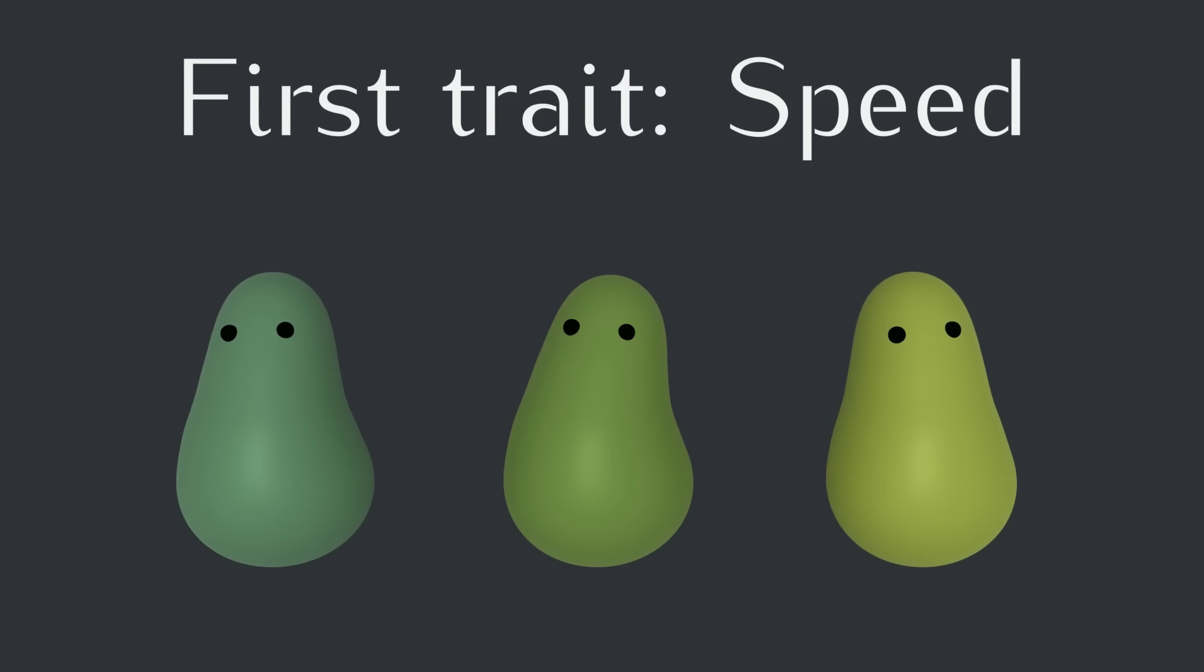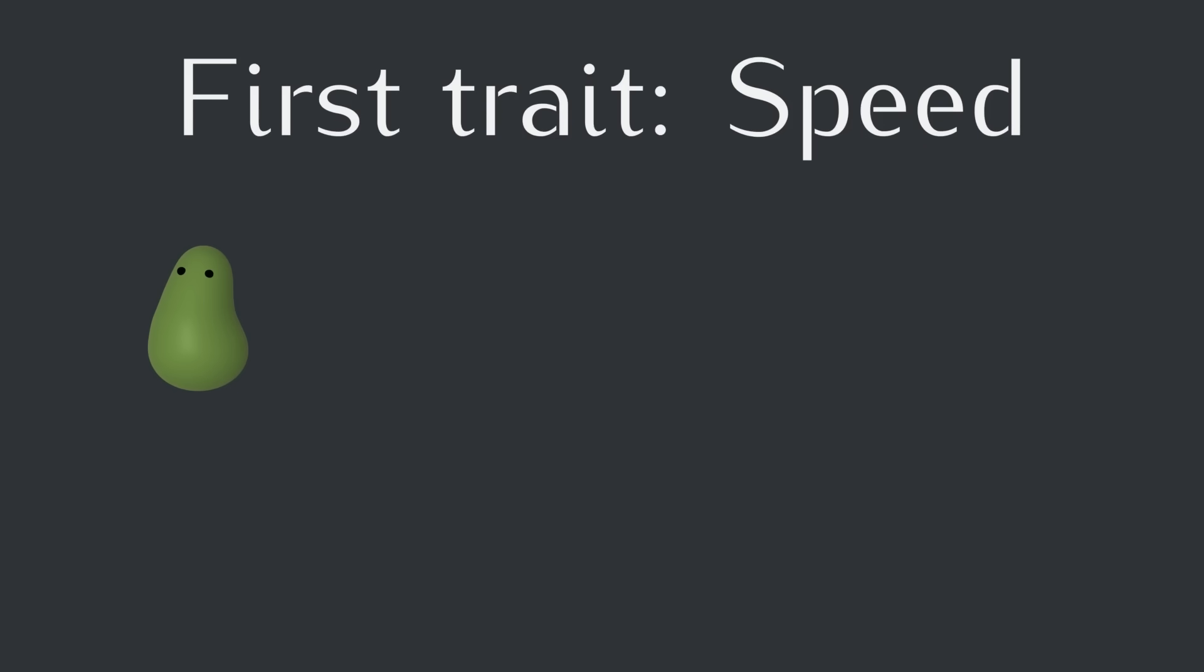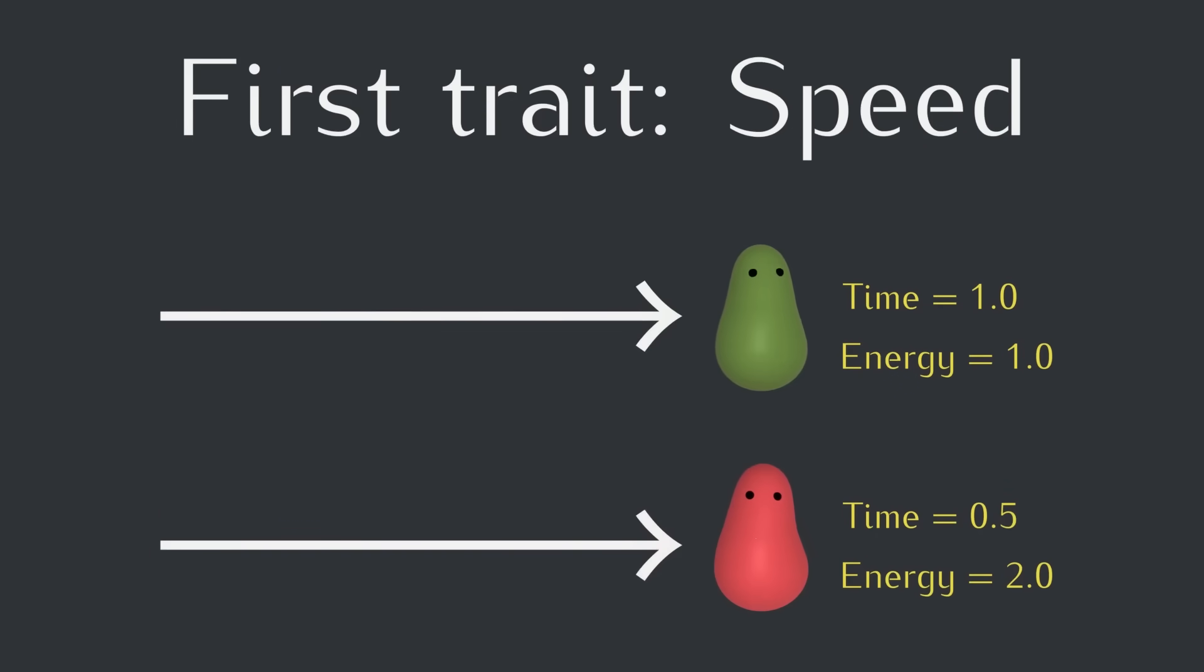Speed is great because it allows you to beat other creatures to the food. But speed will also have a cost. Moving quickly is less efficient. If a creature's speed is doubled, it will cover a distance in half the time, but use twice as much energy to go that distance. Faster creatures can't forage over as much ground as slower creatures, so they might not find food before running out of energy.